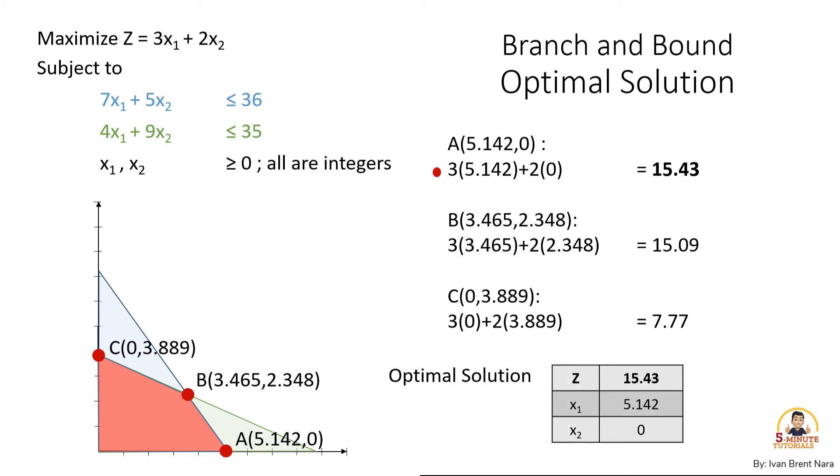Therefore, our optimal solution is point A with a value of 15.43. But it does not satisfy our integer restrictions because x sub 1 is 5.142 and not an integer value.